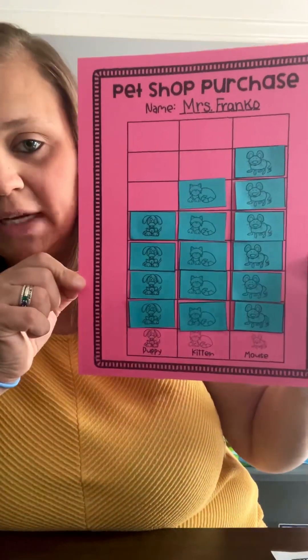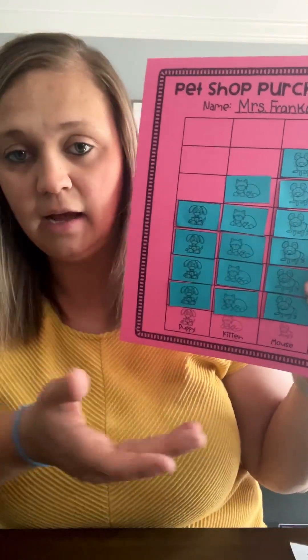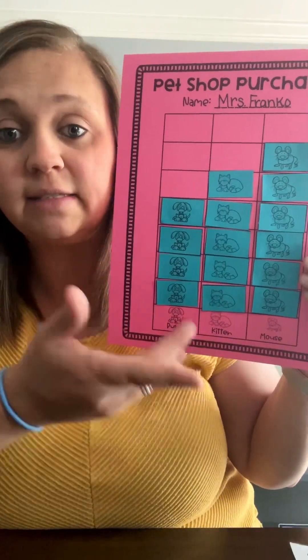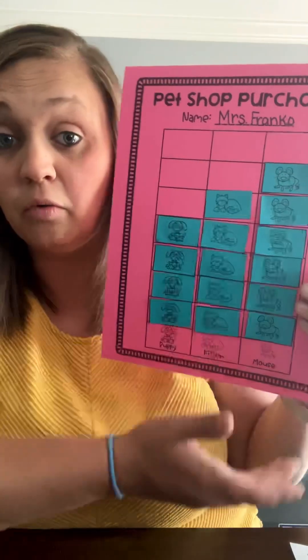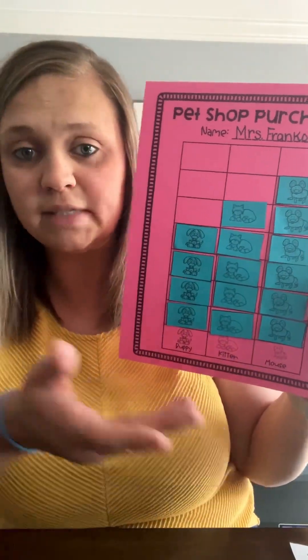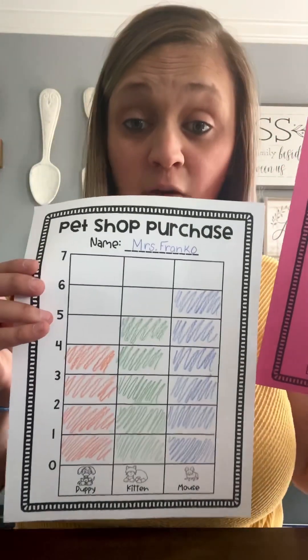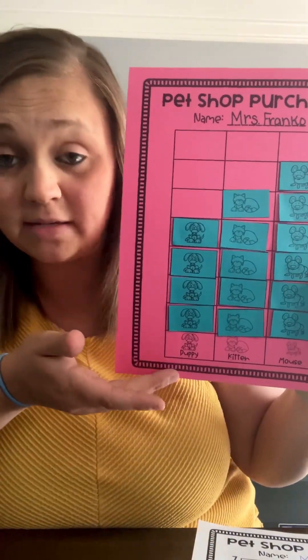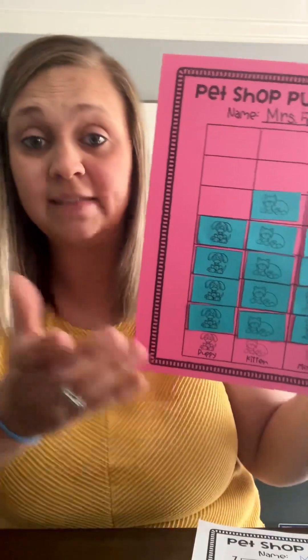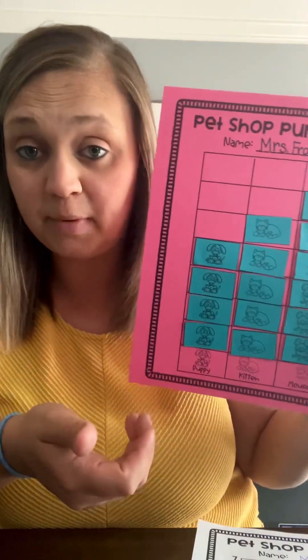Now that our pictograph is complete, I would ask some questions. This is another way to not only collect the data but then interpret the data. For example, I could say: which animal was purchased the most at the pet shop? I would have a student count the mice, the kittens, the puppies, and then they would tell me that mice were bought the most. I can ask a question like, what was bought the least? Looking at our pictograph and bar graph, we can see that the puppies were purchased the least. We can also compare: how many more kittens were bought than puppies? And they could count and say one more kitten was purchased over puppies.